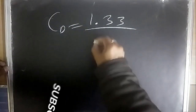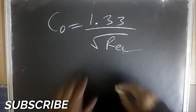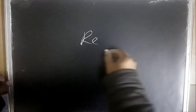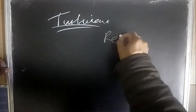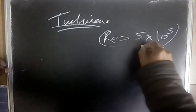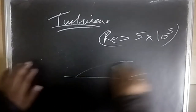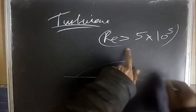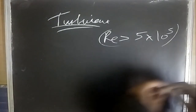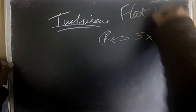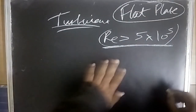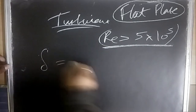Note: 'laminar' here refers to the boundary layer behavior on a flat plate, not pipe flow. For turbulent boundary layer on a flat plate, the condition is Re > 5×10⁵. For Re < 5×10⁵, use the laminar formula. This condition is specific to flat plates — do not confuse with pipe flow.